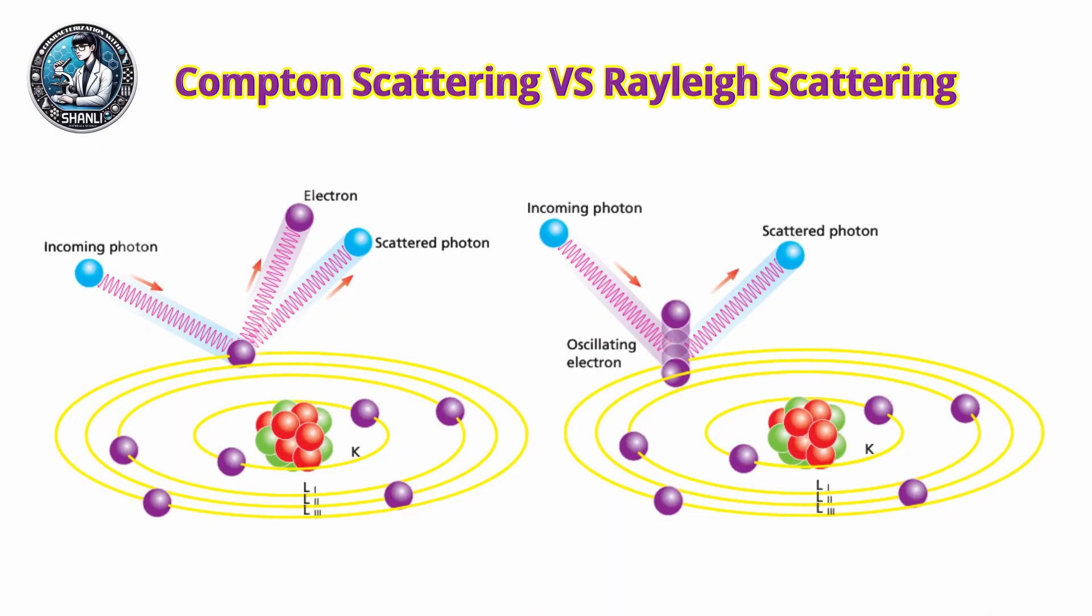Let's take a quick informative break to understand the difference between Compton and Rayleigh scattering. When X-rays hit a sample, not all of them produce characteristic radiation. Some are scattered instead, as we explained it before.